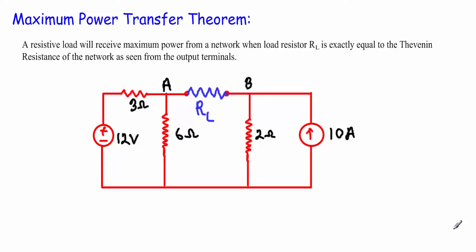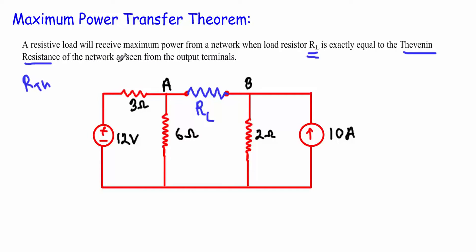This theorem states that a resistive load will receive maximum power from a network when the value of that load resistance is exactly equal to the Thevenin resistance, written as RTH, measured from the output terminal.